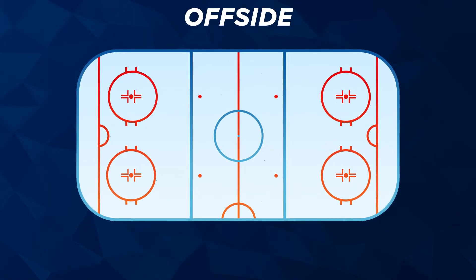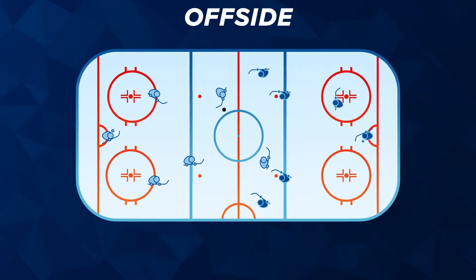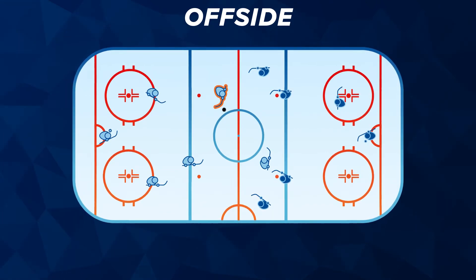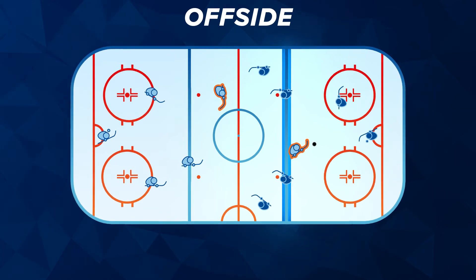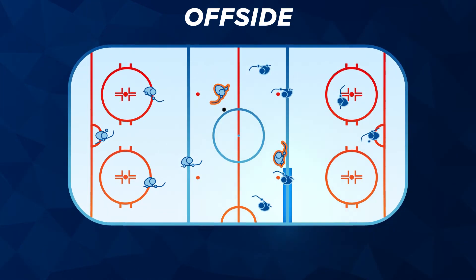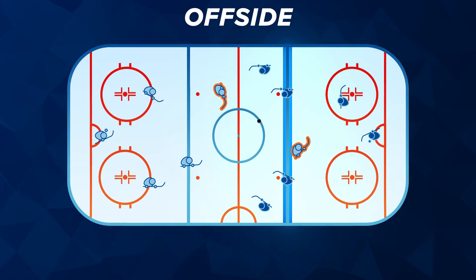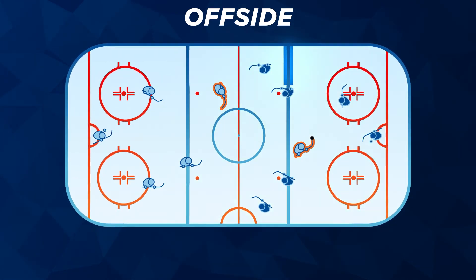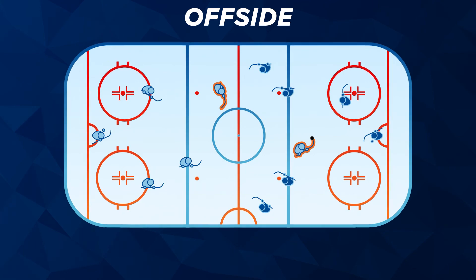Offside: this is one of the most confusing rules for non-hockey fans. Basically, it means that if team A has possession, the puck must cross the blue line into team B's zone before the attacking players do. If a player from team A enters the zone before the puck, then team A is offside. There are other nuances to offside, but that is the simplest definition.